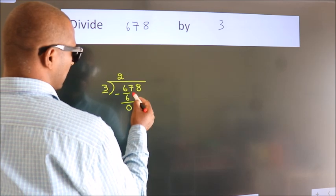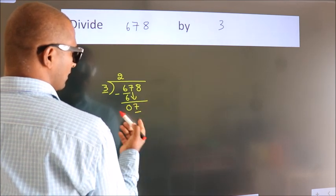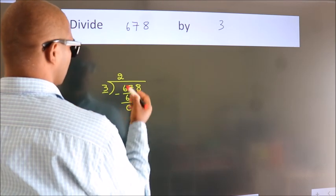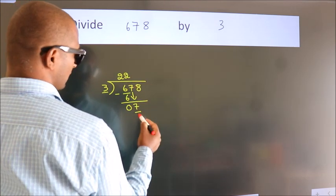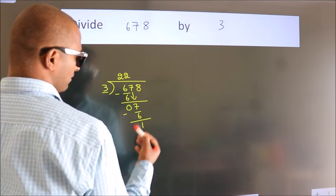After this, bring down the beside number. So, 7 down. A number close to 7 in the 3 table is 3 times 2, 6. Now we subtract. We get 1.